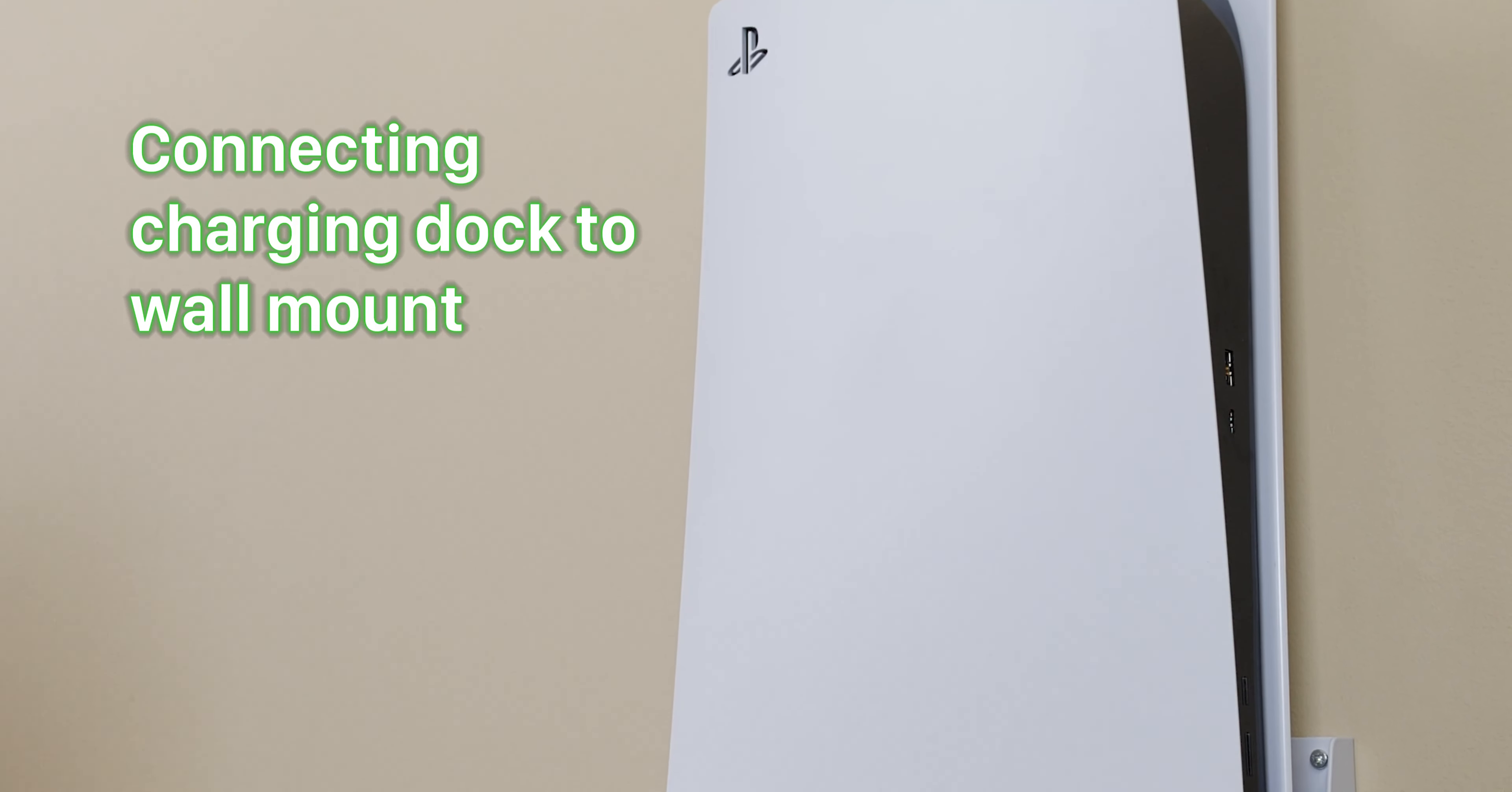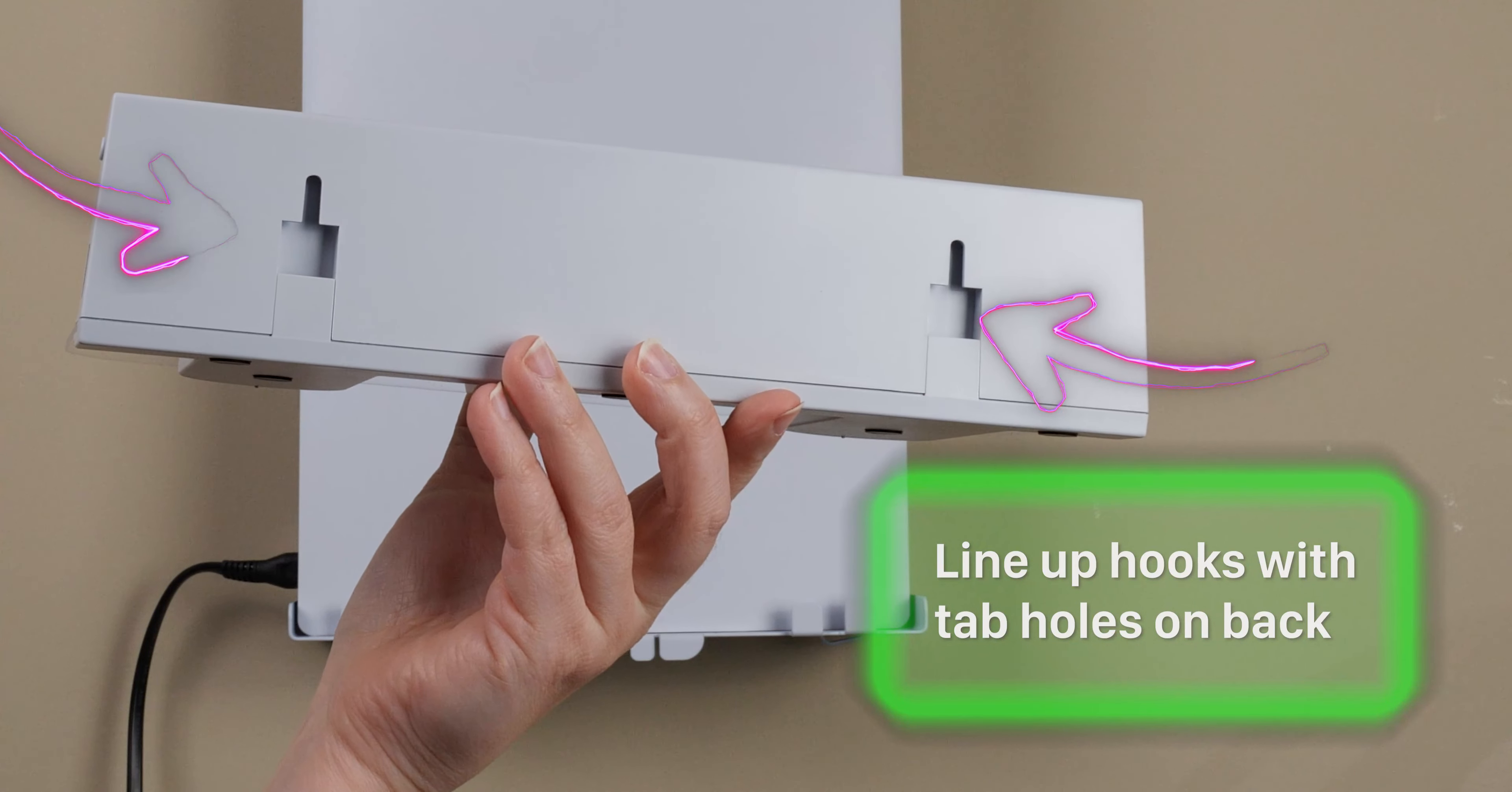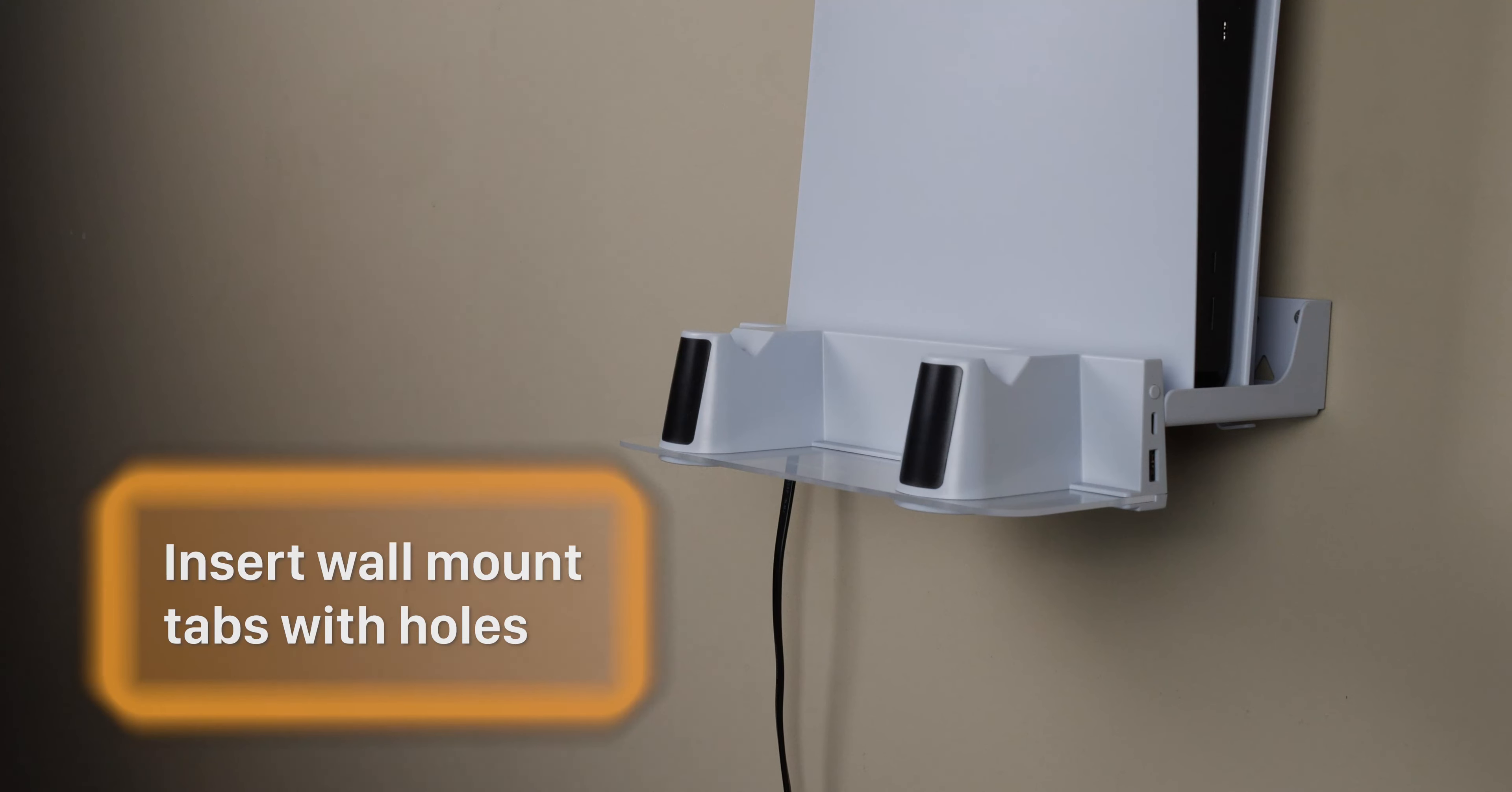Connecting the charging dock to the wall mount. Line up the hooks on the wall mount with tab holes on the back of the charging dock. Insert the wall mount's protruding tabs in the charging dock's tab holes. Make sure to press with enough force to ensure that the two pieces connect firmly.